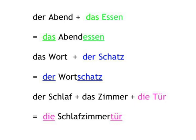And you can even string three or even more words together. 'Der Schlaf' (sleep), 'das Zimmer', and 'die Tür' combine to form 'die Schlafzimmertür', because the last noun, 'Tür', is feminine.